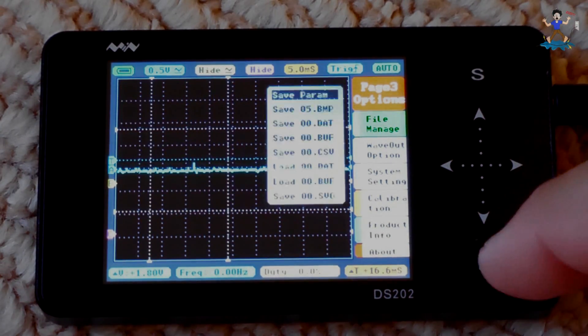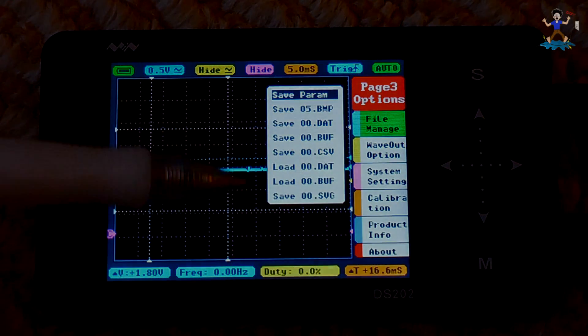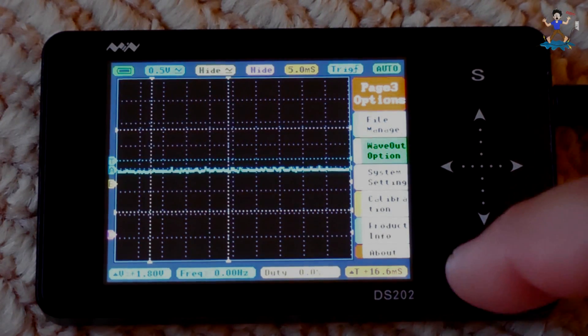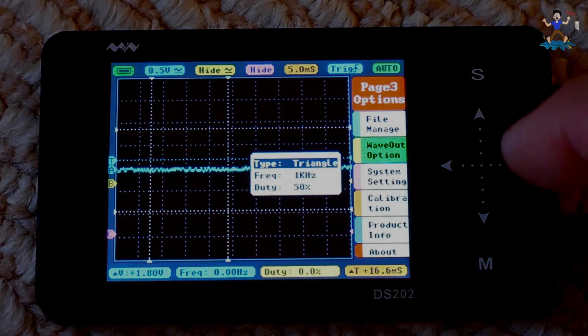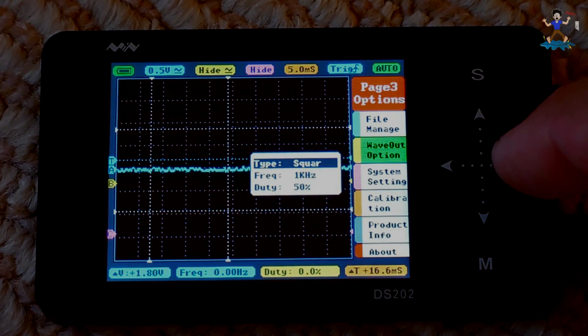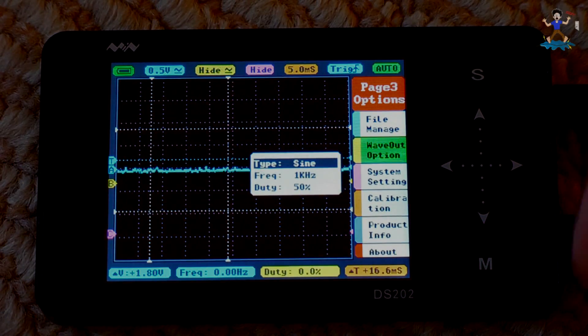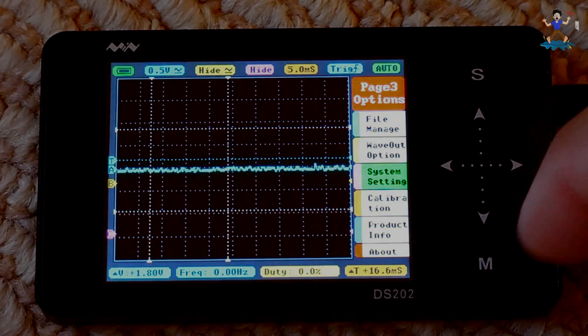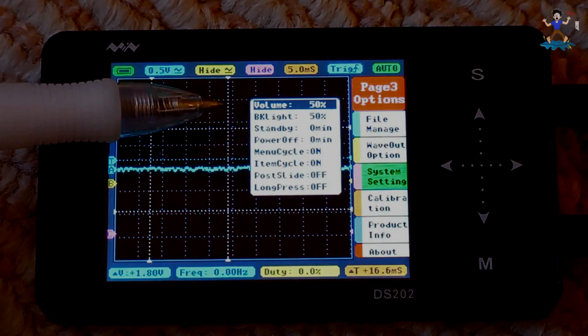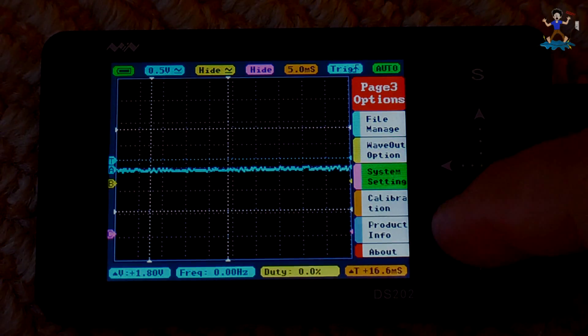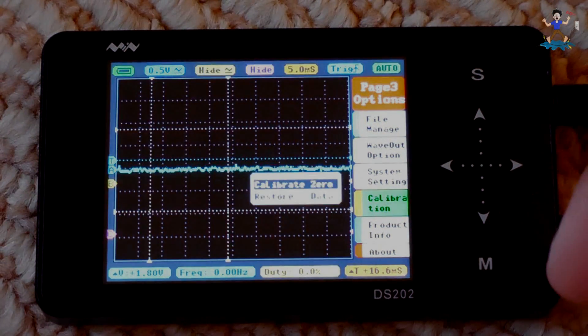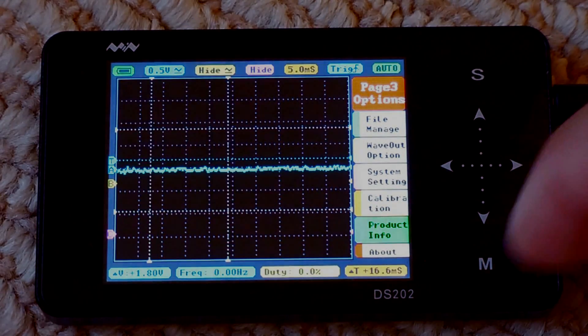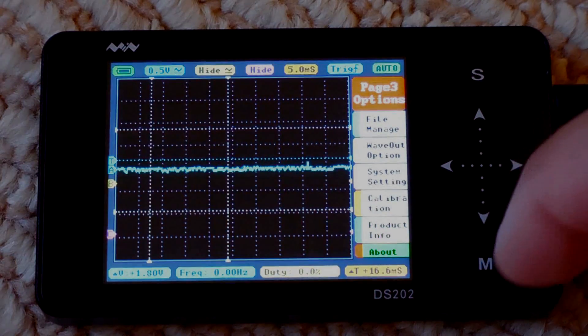Now we're going to slide over one more time to page three. File manager. This is when you save screenshots. You can go save them. Or you could load them back up to take a look. And here's your waveform output. You could choose square wave, sine wave, triangle wave, sawtooth. Back to the square wave. Let's leave it on sine because I'm going to show you that in a minute. And you could also adjust the duty on the other waves. The square wave. Let's scroll down again. System settings. You can adjust the volume, the backlight, standby, power. There's a whole bunch of settings right here to adjust. Calibration. If you want to calibrate the unit. Product info. And down here is about. And that is it.